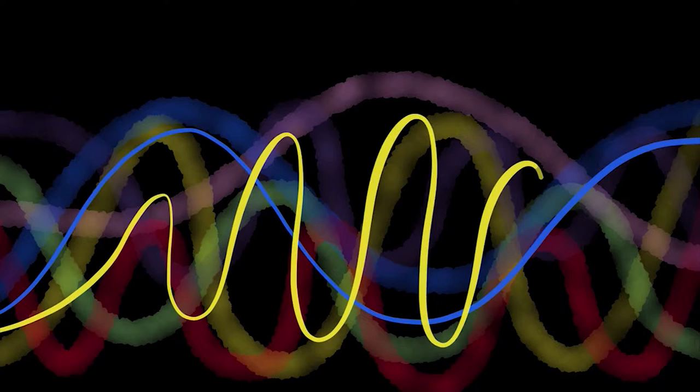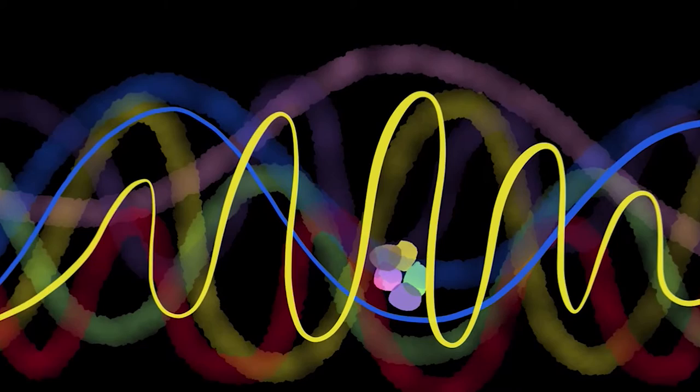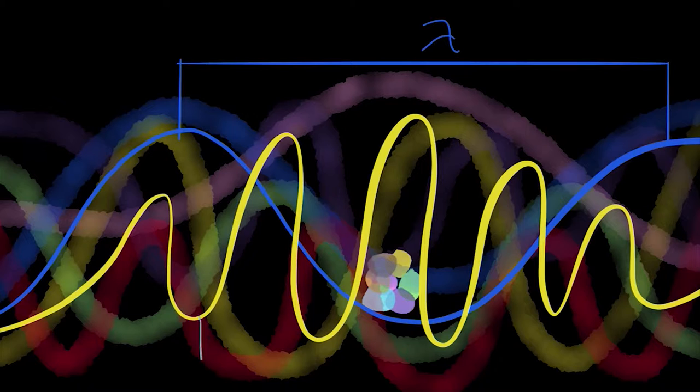The important thing here is wavelength, the distance between the two crests of the wave. If the object is much smaller than the wavelength, the wave will not see it.